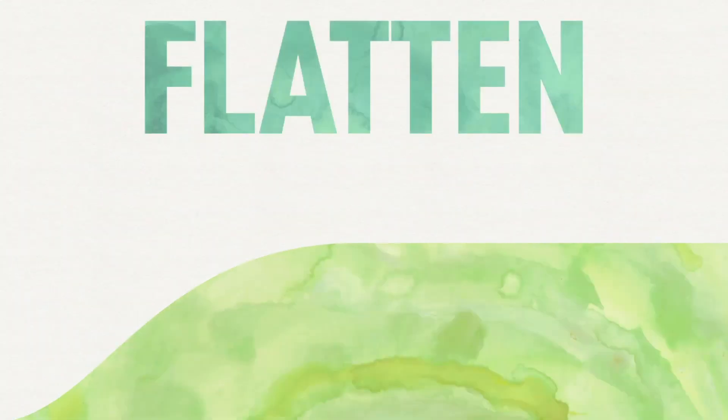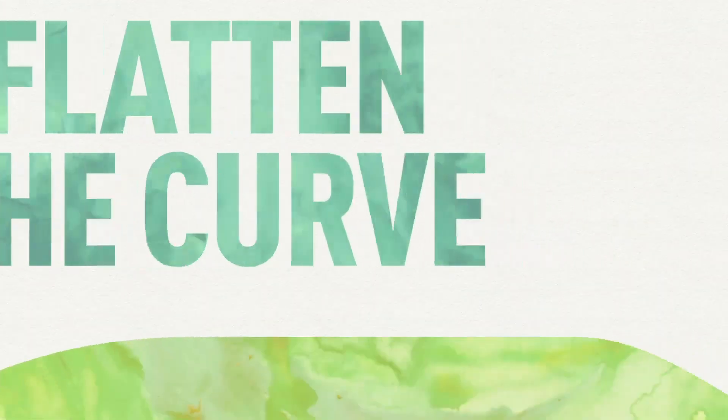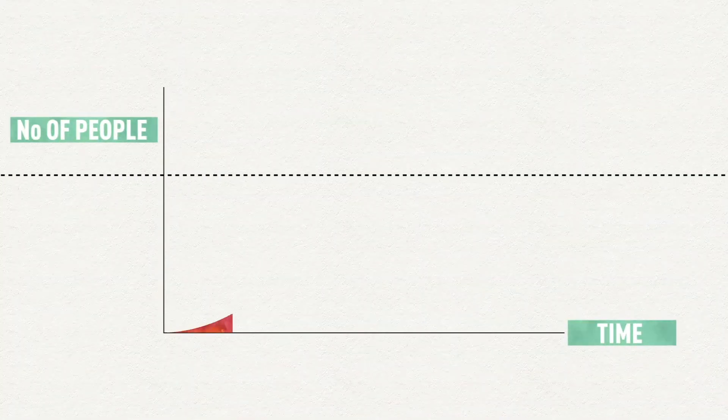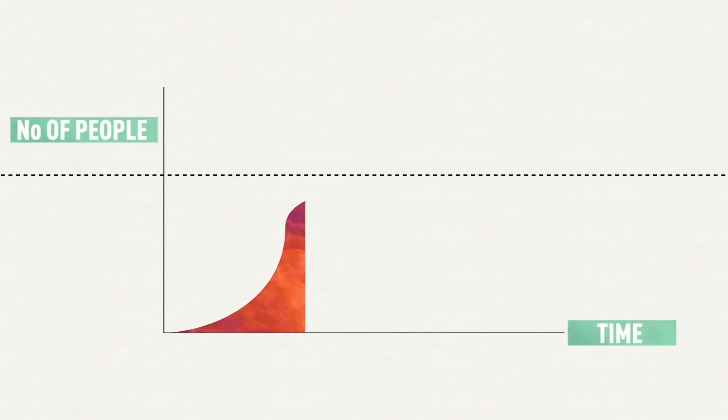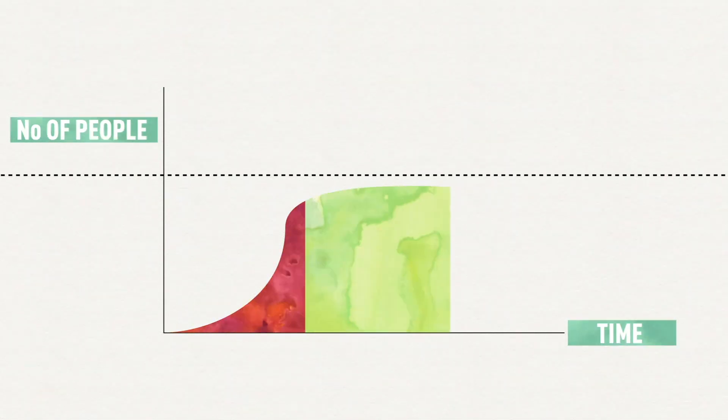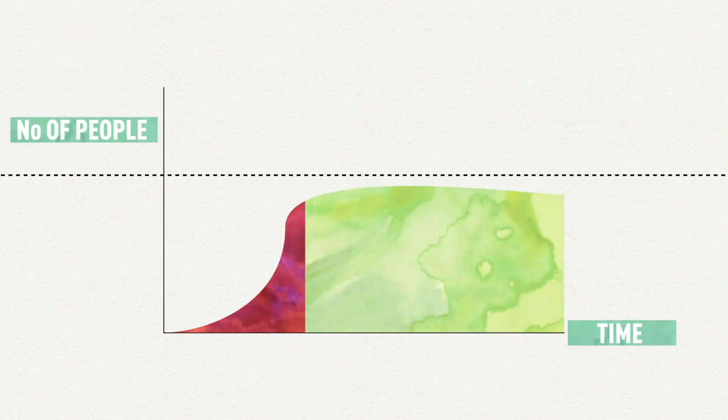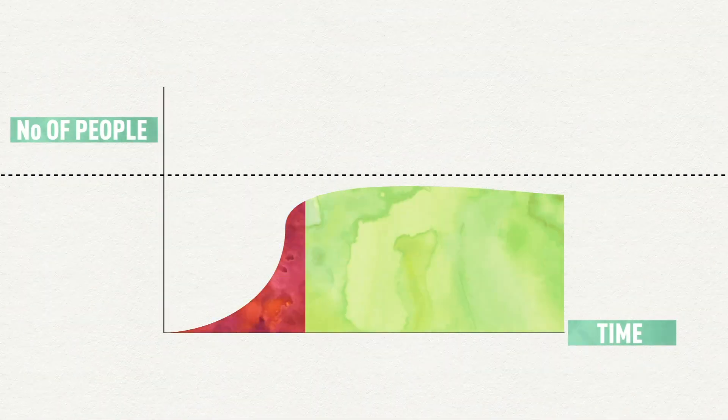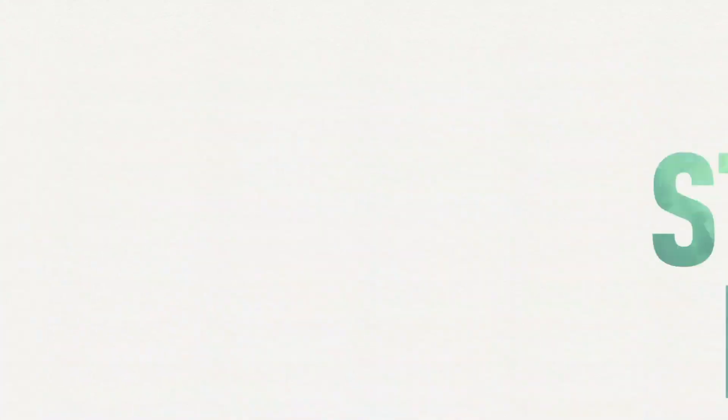As more of us continue to do these things, we will flatten the curve. But we also have to remember that COVID-19 can take up to two weeks after infecting someone for them to show any symptoms. So the effects of self-isolating can only be seen on the curve a few weeks after we've all started doing it. That's why we're asking everyone to keep staying home.